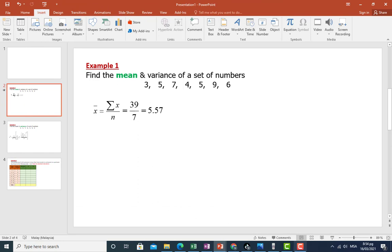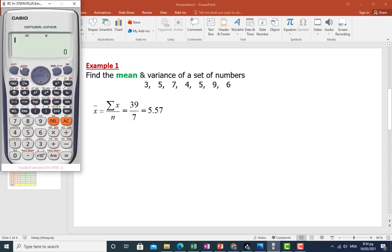Okay, from the calculator also we can find the mean. Go to shift 1, press number 4. Then we are going to choose for number 2 for mean. Press equal, and then the answer also 5.57.